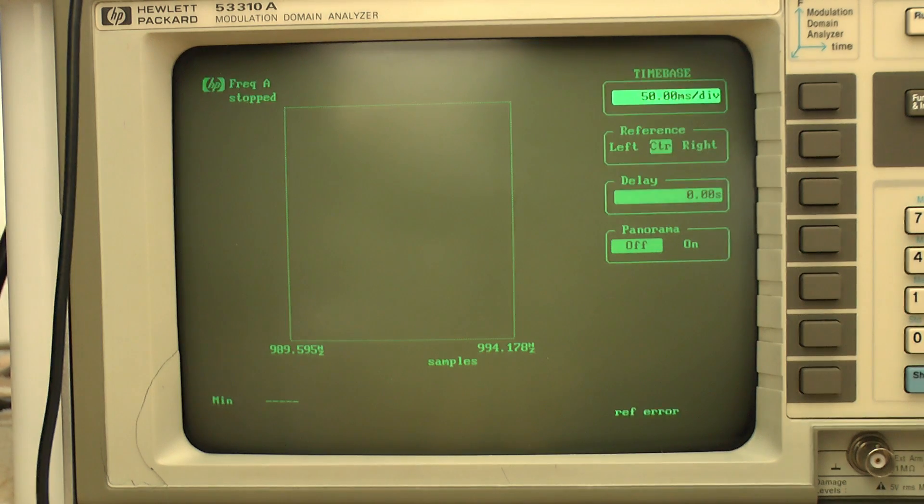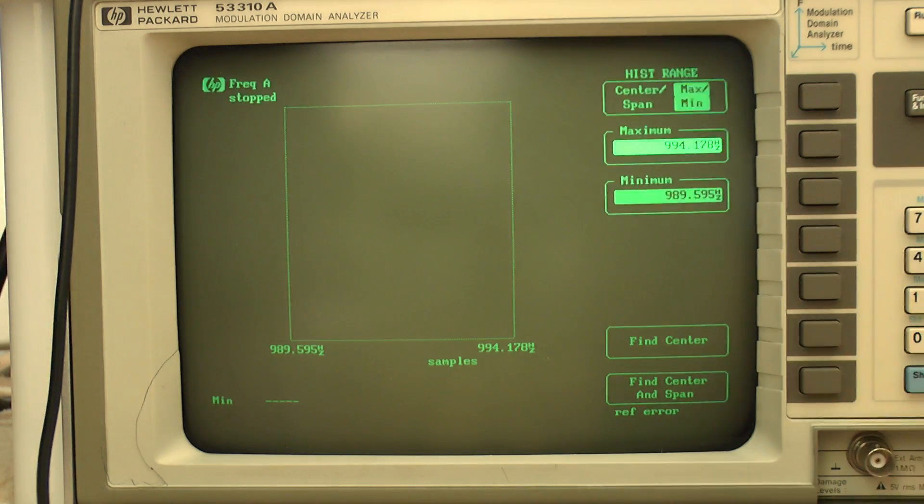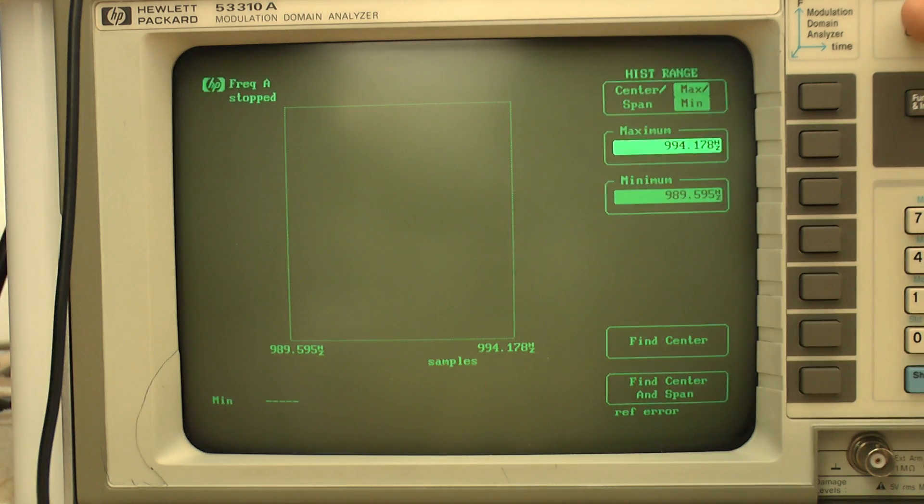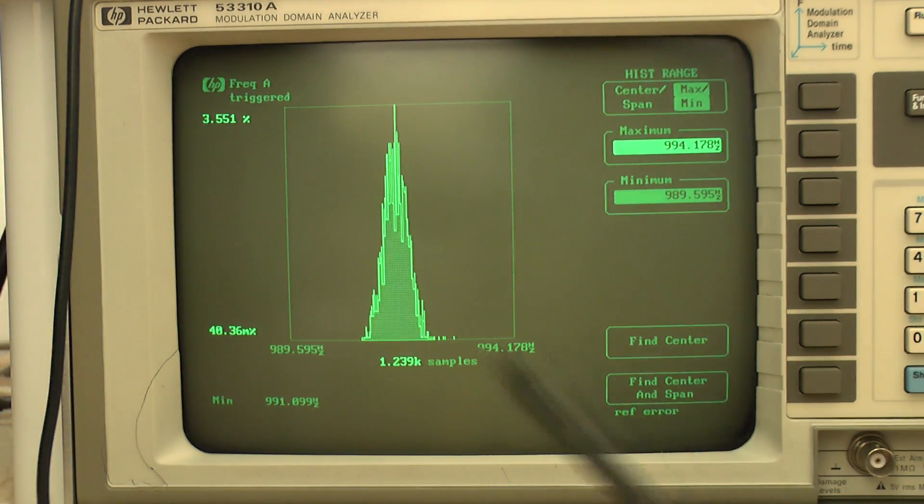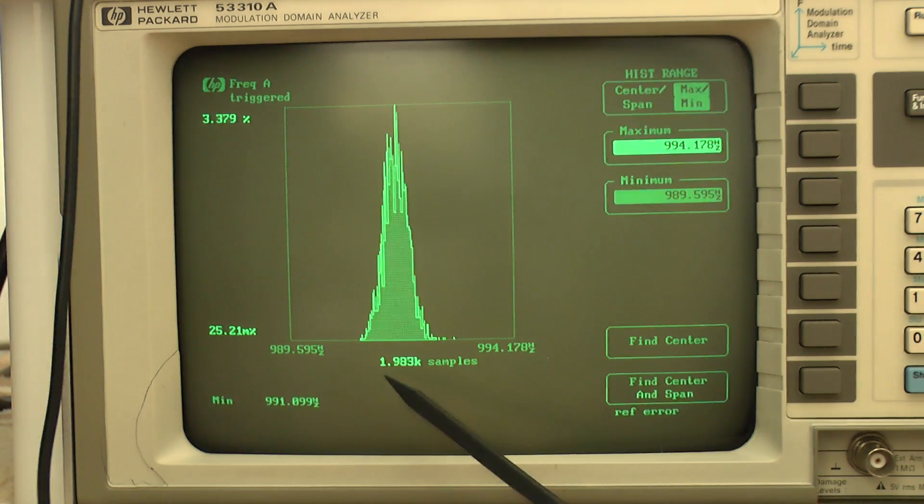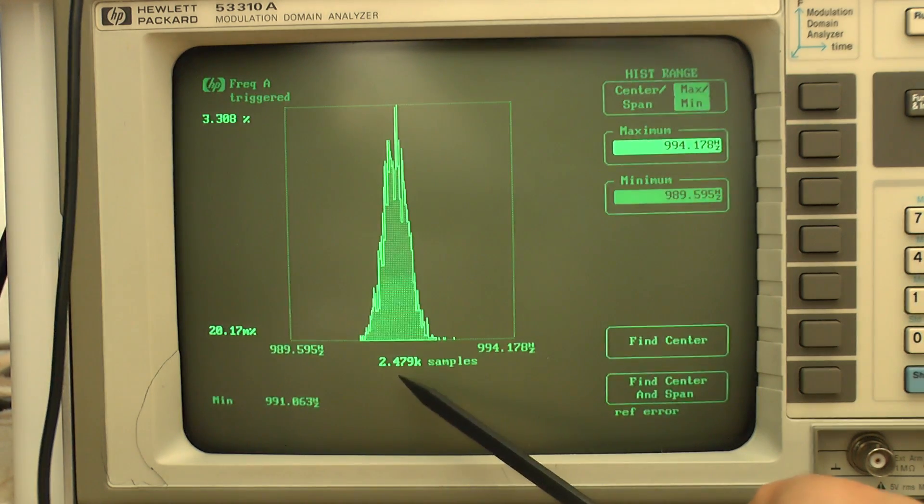And now it's time to get to work. To make things really simple, I have set up the time base and the vertical span before. And now we are simply clicking the run button. And as we see, the modulation domain analyzer gets to work. Here at the bottom, we are seeing that the samples are being collected.